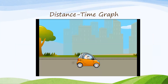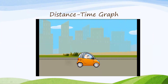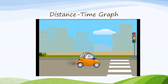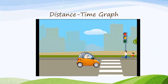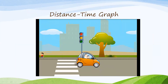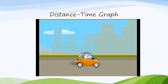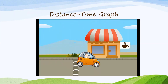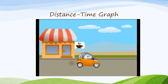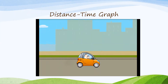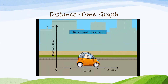Let's see what is a distance time graph. When you are traveling in a car, sometimes you move really fast, sometimes you have to slow down, sometimes you have to take a halt and stop the car. All these might happen in a single journey, and all these can be expressed graphically by using simple geometric shapes.